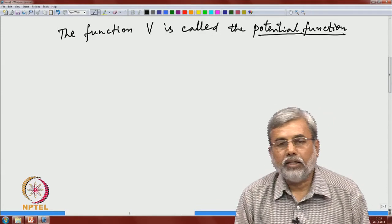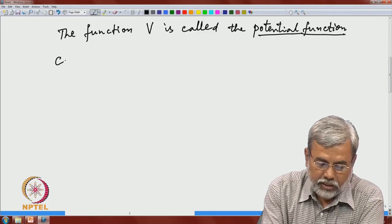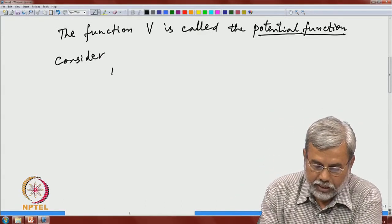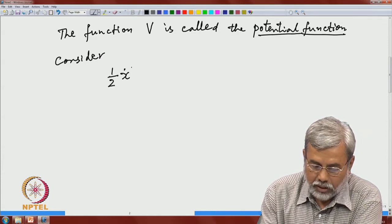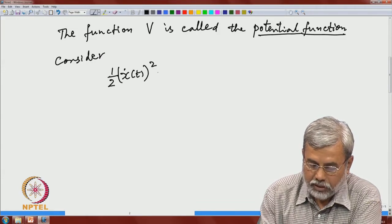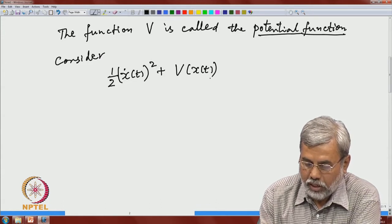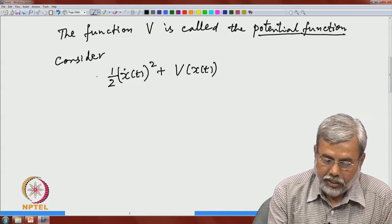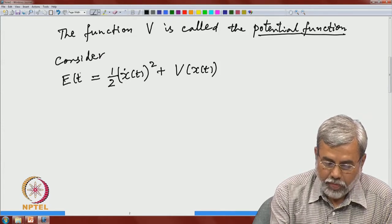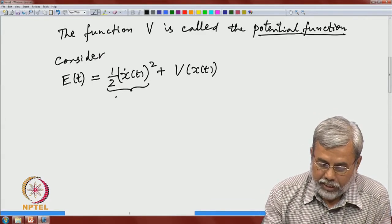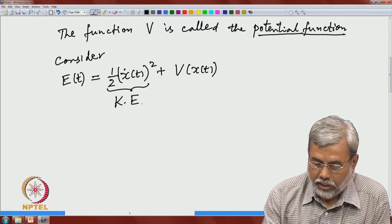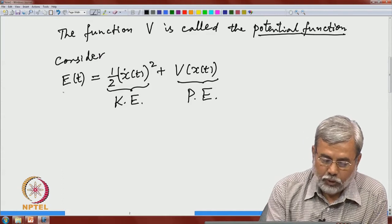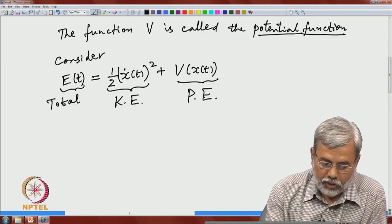The terminology comes from classical mechanics. If x is a solution of that conservative second-order equation, consider the quantity: (1/2)x-dot(t)² plus V(x(t)). Let me call this E(t). Here x(t) is a solution of that equation — this term represents kinetic energy and this represents potential energy. So this is the total energy at time t, the total energy of the particle.